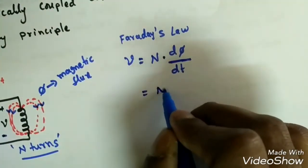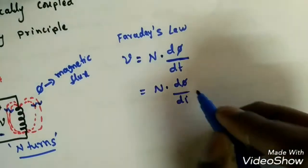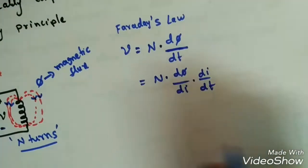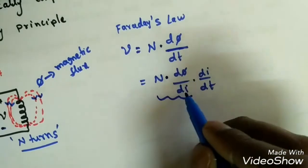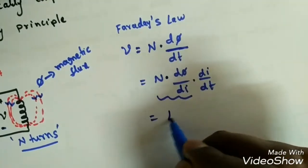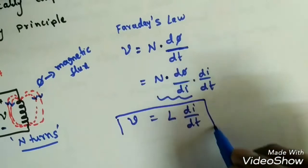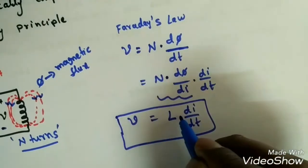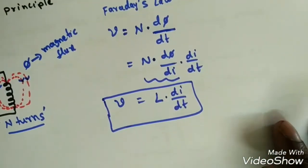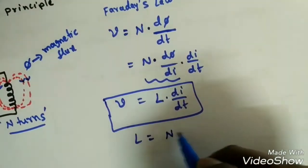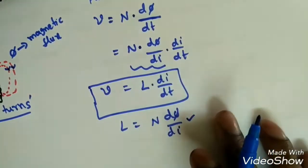We can rewrite this as v = N · (dΦ/di) · (di/dt). The quantity N · dΦ/di, which represents the magnetic flux generated per unit current, is called the inductance parameter L. So the induced voltage is v = L · di/dt.